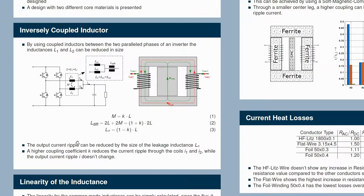Now, the output current ripple can be reduced by the size of the leakage inductance. And a higher coupling coefficient K reduces the current ripple through the coils I1 and I2, while the output current ripple I doesn't change.